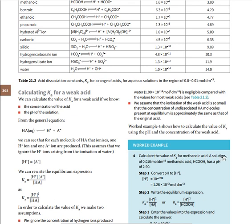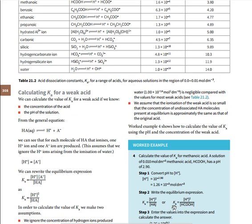Calculate the Ka of methanoic acid given that it has a pH of 2.9. You know the pH, so you can calculate [H⁺] using [H⁺] = 10^(−pH). When you have [H⁺], you apply the formula: Ka = [H⁺]² / [HA]. Substitute [H⁺] and the acid concentration, and you can calculate Ka.